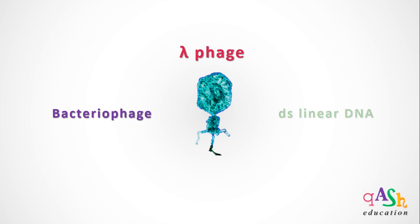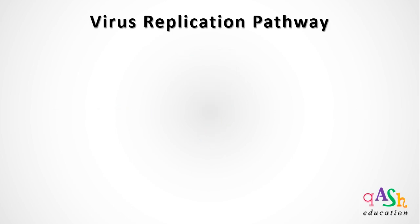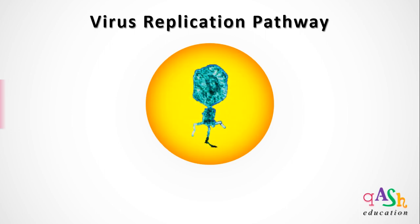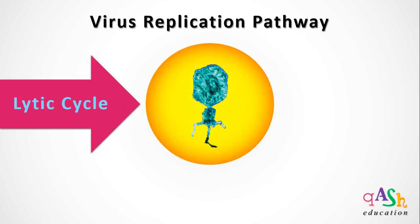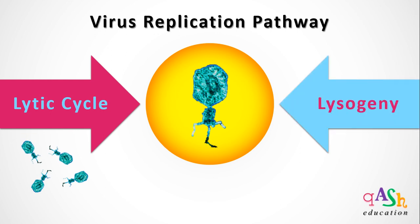From its genome perspective, it carries a double-stranded linear DNA genome. When the lambda phage wants to replicate, it has two options for replication pathway. Either it can follow a lytic cycle, through which small virion particles will be generated by the lysis of the bacterial host cell. The other replication pathway is lysogeny, wherein the lambda phage genome gets integrated into the bacterial genome, and as the bacterial genome replicates, the phage genome replicates alongside.